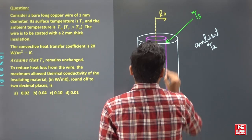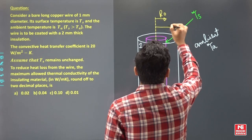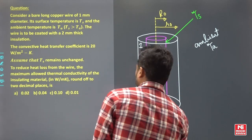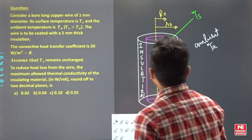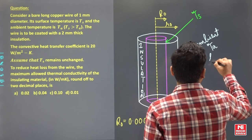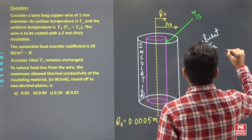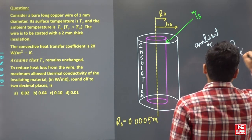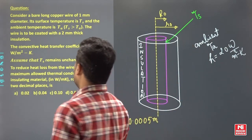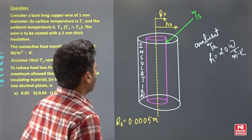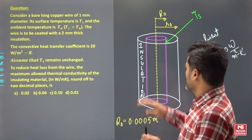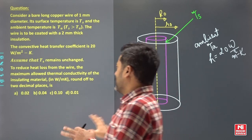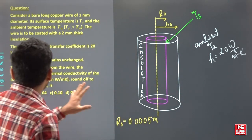Let's say this radius is small r_O. Now convective heat transfer coefficient is given, so H is given as 20 watt per meter square Kelvin. Assume that T_S remains unchanged after applying the insulation. It is saying that T_S remains unchanged, this is T_S only, it is not getting changed after applying the insulation.